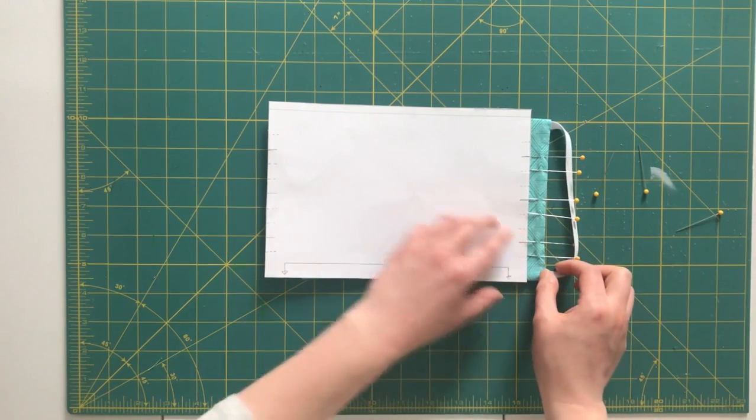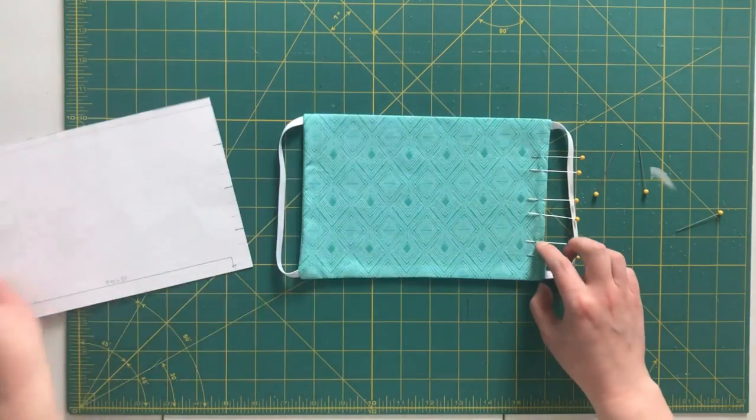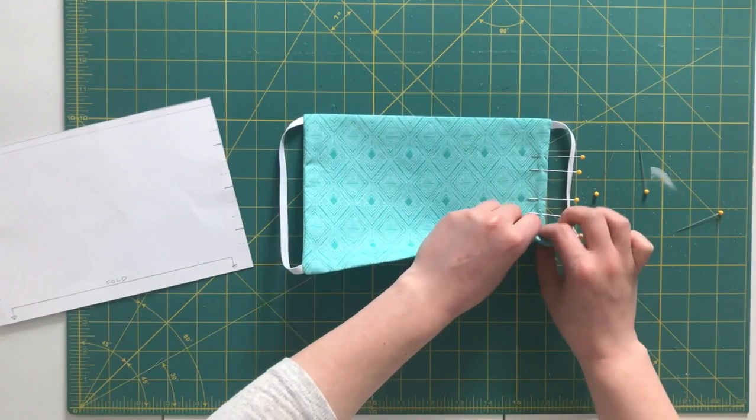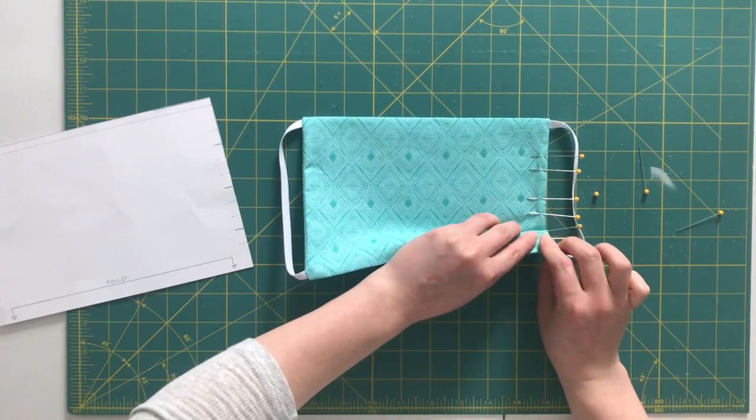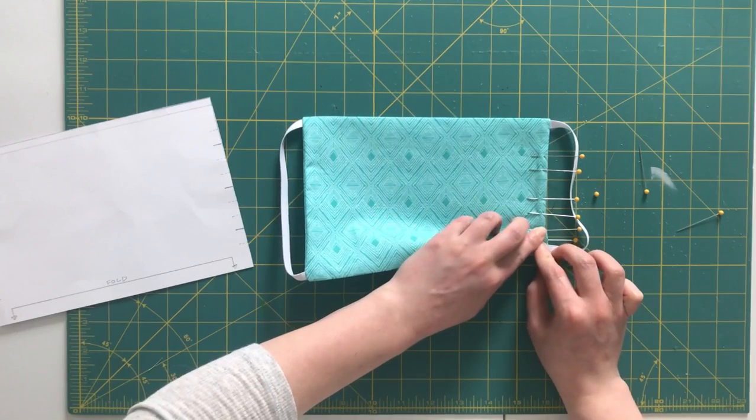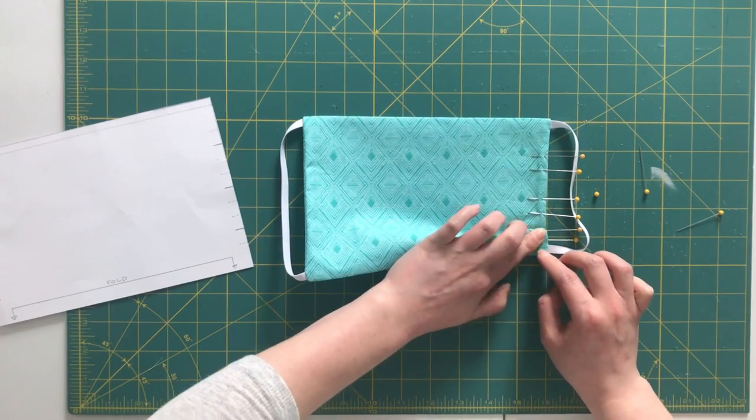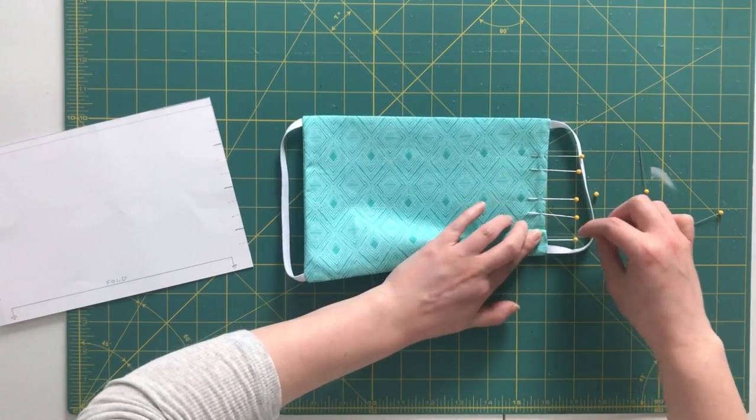So in general, I'm going to fold at that center point and then fold again at that bottom point. And that's going to make up my pleat. So I'm going to pin that into place.